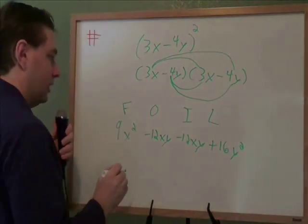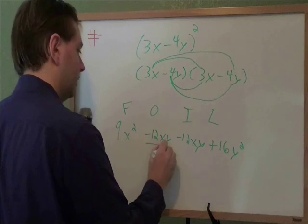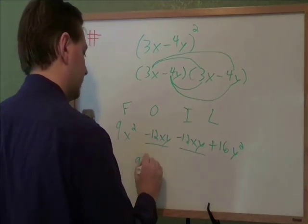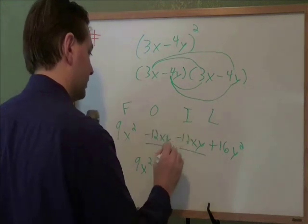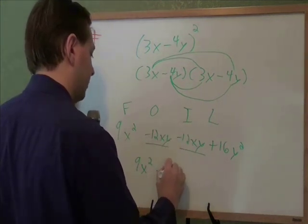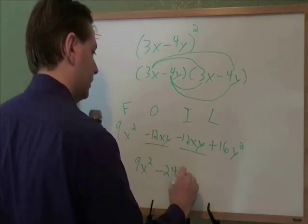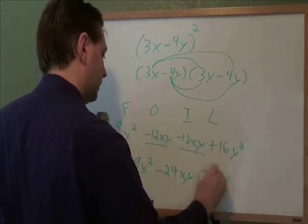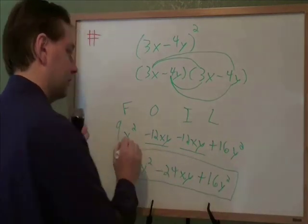And once we FOIL it out, we want to combine like terms. Our only like terms are these xy's in the middle. So that gives us 9x squared. Minus 12 and minus 12 combines to give you minus 24. And that's still a plus 16y squared there. And that is that answer.